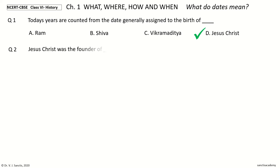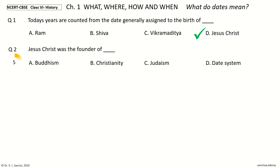Question 2. Jesus Christ was the founder of dash. Your options: Buddhism, Christianity, Judaism, date system. And the answer is Christianity.